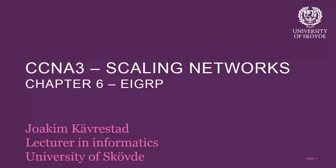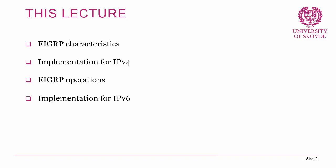Hello and welcome back to this lecture series on CCNA3 Scaling Networks with me Joachim Schererstadt from the University of Hovde. We've now reached Chapter 6, which is EIGRP — the first of two chapters where we'll dig deep into EIGRP. The topics include characteristics, implementation for IPv4, how the protocol operates with the DUAL routing algorithm, and we'll end with implementation for IPv6, including two demonstrations.